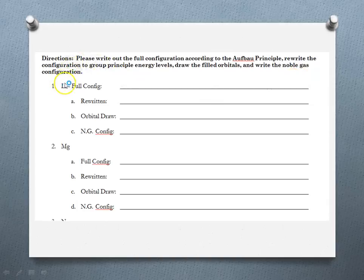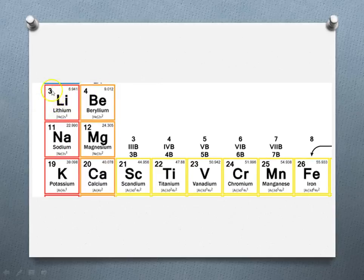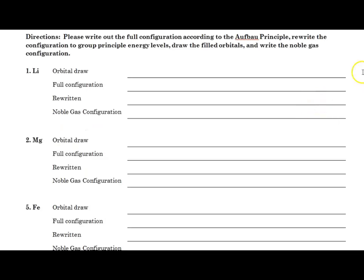Now we're going to start with lithium here. We're going to go briefly to the next slide to remind ourselves that lithium has atomic number three, and now I'm going to pull up a worksheet that I'm going to fill in with you. Here I have the worksheet, and what I've done is I've changed the order a little bit because I think it's easier to do the orbital draw first.